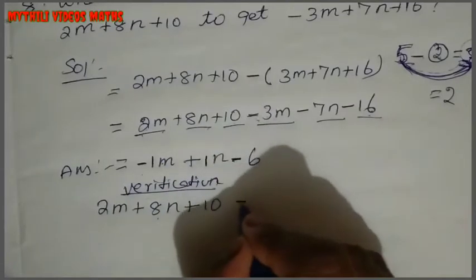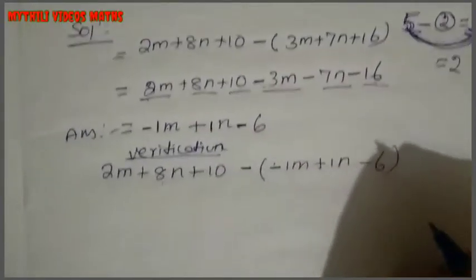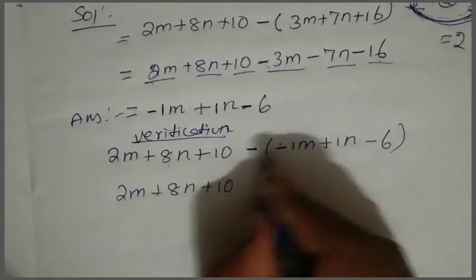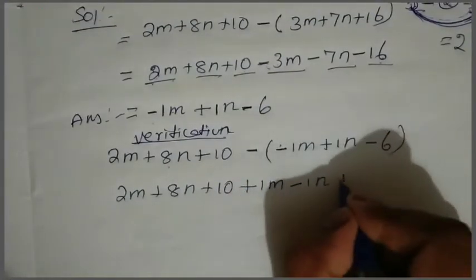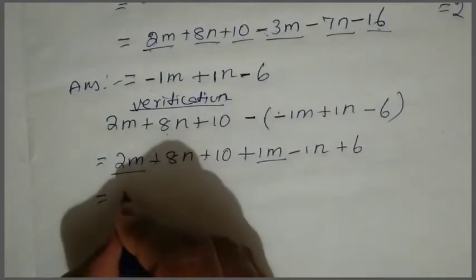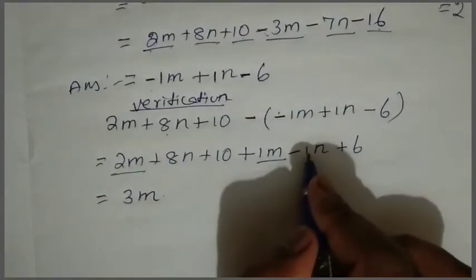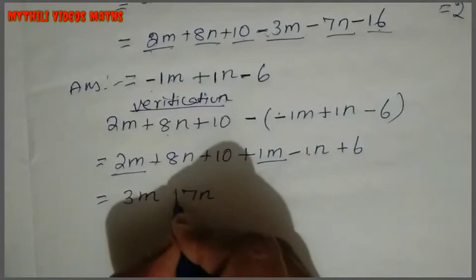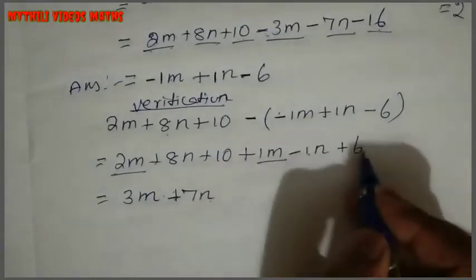So the answer is: minus 1m plus 1n minus 6. Now 2m plus 8n plus 10, with the minus symbol — minus into minus is plus 1m, minus into minus is plus 6. So add like terms: 2m plus 1m is 3m. And then 8 minus 1 is 7, so 7n. Last number: plus 10 plus 6 equals plus 16.